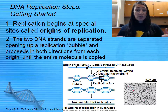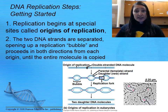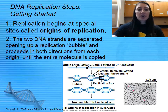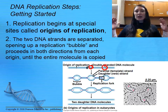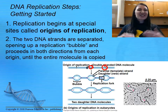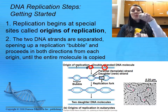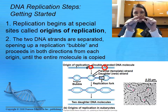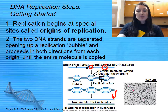We've condensed DNA replication into six main steps. It always begins at the origin of replication — a special site where you start. You would never start at one side and move all the way through to the other side because it would take too long. The two DNA strands get separated, opening up what we call a replication bubble, and the daughter strand is synthesized proceeding in both directions until the entire molecule has been copied.